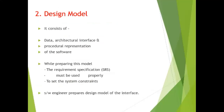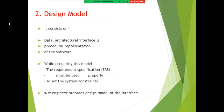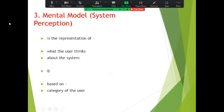The second is the design model. It consists of data, architectural, interface, and procedural presentation of the software. While preparing this model, the requirement specification must be used properly to set the system constraints. The software engineer prepares the design model of the interface.